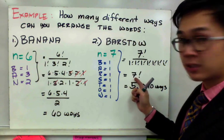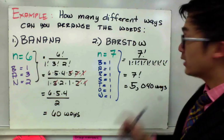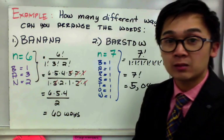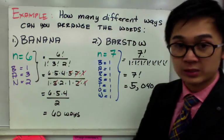Now, 7 factorial, using your calculator, is 5040. So that means there's 5,040 ways on how we can arrange the word barstow using permutation.